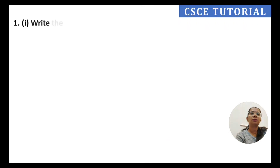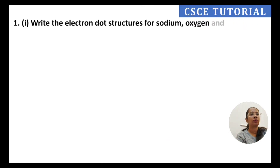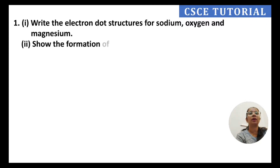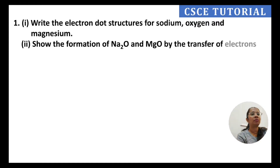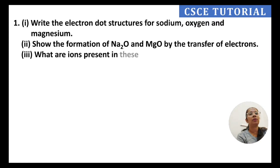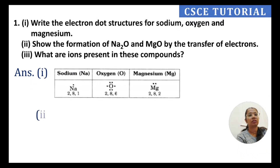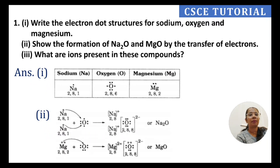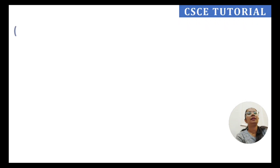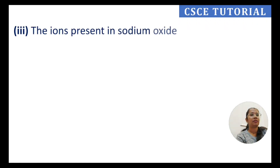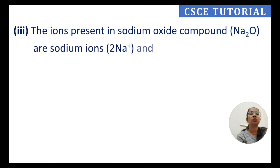Page 49, question 1: Write the electron dot structure for sodium, oxygen, and magnesium. Second part: show the formation of sodium oxide and magnesium oxide by transfer of electrons. Third part: show what ions are present in these compounds. For sodium oxide, the ions present are two sodium ions (Na⁺) and one oxide ion (O²⁻).